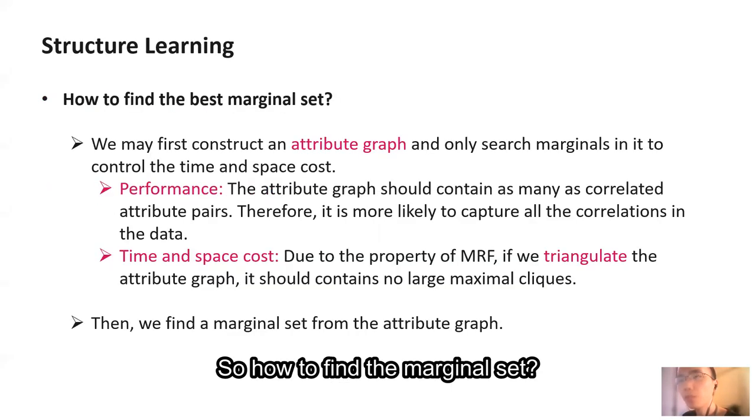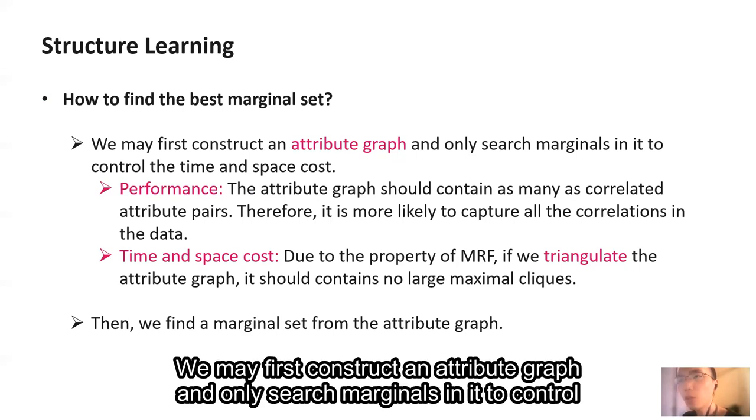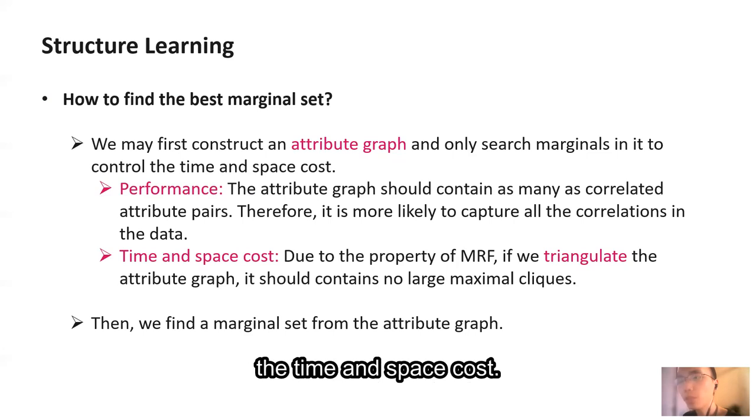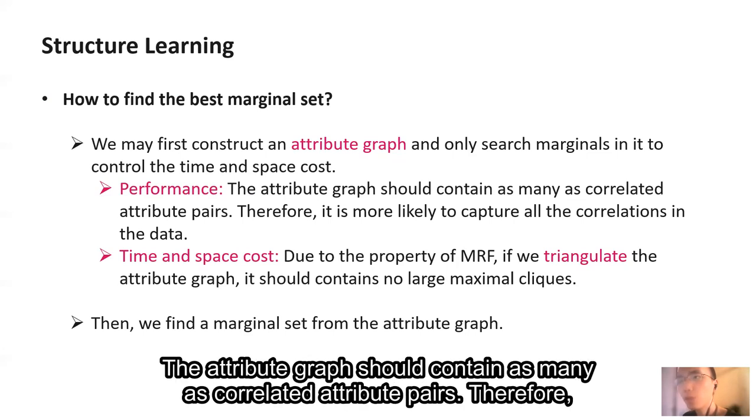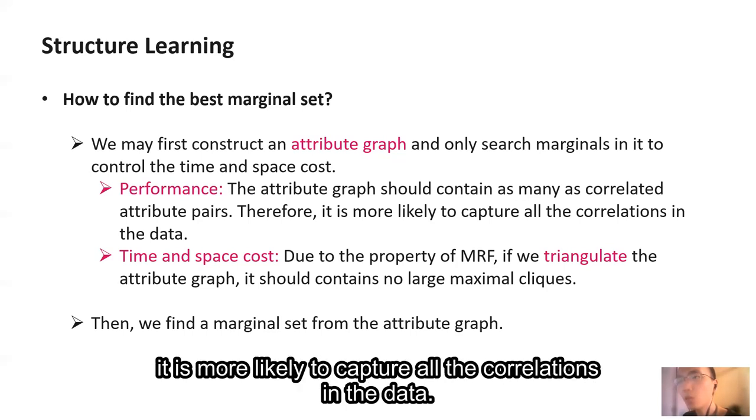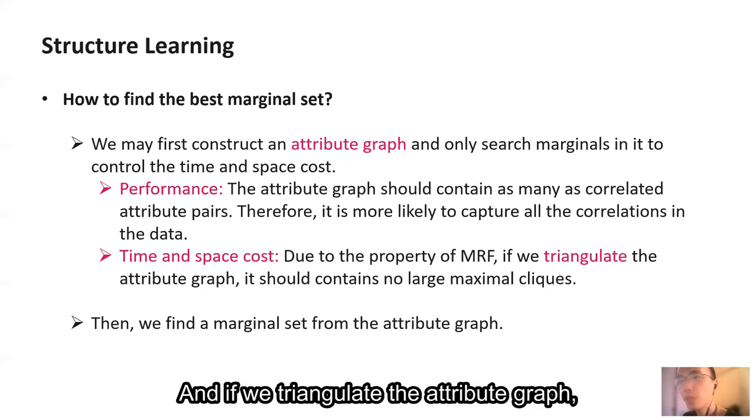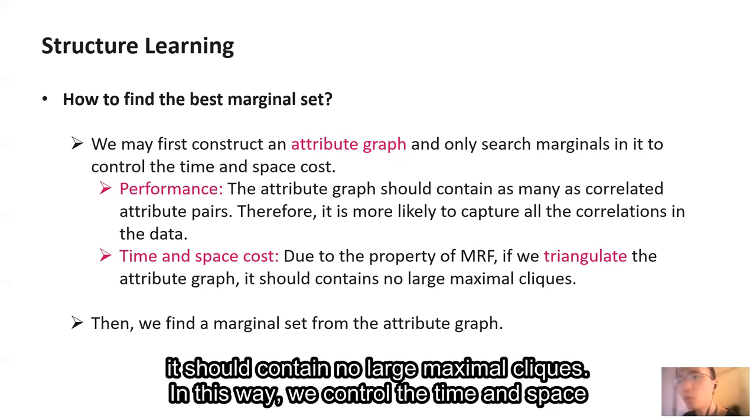So how to find the marginal set? We may first construct an attribute graph and only search marginals in it to control the time and space cost. First, the attribute graph should contain as many correlated attribute pairs as possible. Therefore, it is more likely to capture all the correlations in the data. And if we triangulate the attribute graph, it should contain no large maximal cliques. In this way, we control the time and space cost.